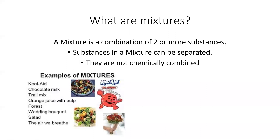First, what are mixtures? A mixture is a combination of two or more substances. These substances in a mixture can be separated — they are not chemically combined. Examples of some mixtures would be Kool-Aid, chocolate milk, trail mix, a wedding bouquet, salad. Even the air we breathe is a mixture.